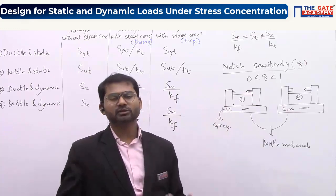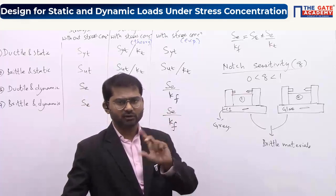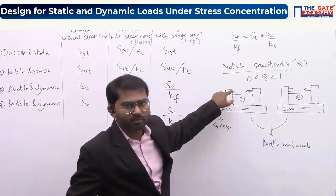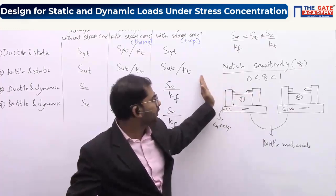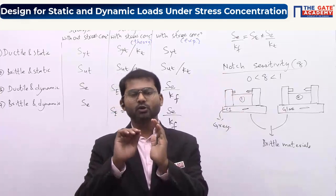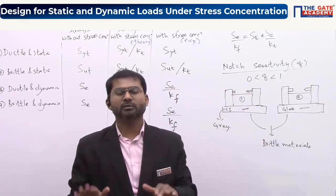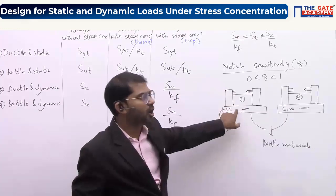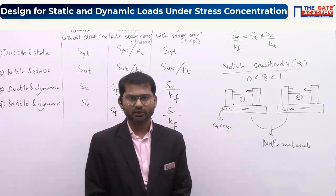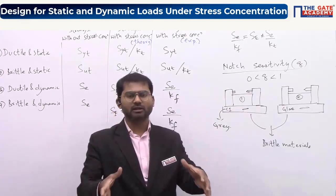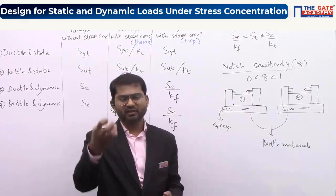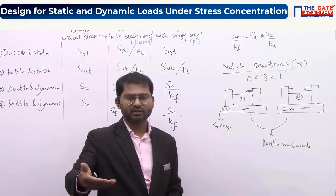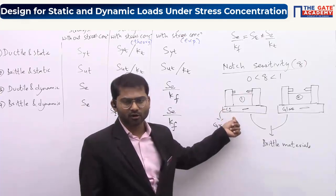The second reason grey cast iron is used as lathe machine bed is its very high damping coefficient — it absorbs vibrations. When rotating components cause the machine to vibrate, the cast iron bed absorbs those vibrations, similar to how a large cement block at the bottom of a sewing machine absorbs its vibrations. So grey cast iron provides both low notch sensitivity and high vibration damping.